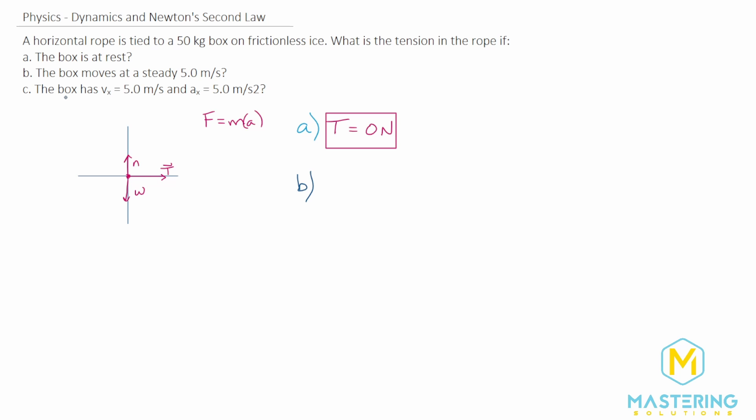For B, we need to figure out what the tension in the rope is if the box moves at a steady speed of 5 meters per second. And so it's actually the same thing. Steady velocity will give us zero for the acceleration because acceleration is a change in velocity over a change in time. If the velocity is not changing, acceleration is zero, and it's the exact same here as A. The tension will also be zero newtons.